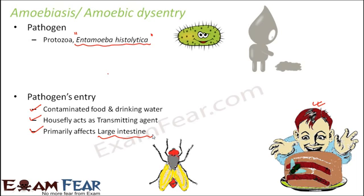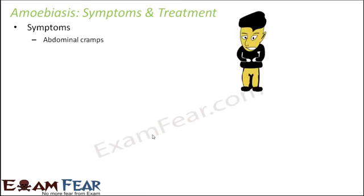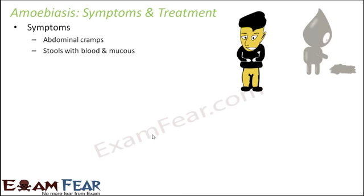When this pathogen affects the large intestine, the symptoms you see will be related to the ejection process. Even though you are able to digest food to some extent, the process of ejection — removal of undigested food — doesn't happen properly. Symptoms include abdominal cramps in the lower abdomen where the large intestine is located, and stools with blood and mucus, since stools are related to the ejection process.